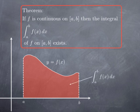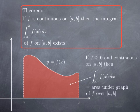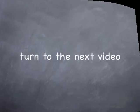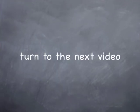To define the area, we do this approximating process, and in the limit what we obtain is a number denoted by the integral from a to b of f(x) dx. In other words, if the function is non-negative and continuous on [a, b], then the integral from a to b of f is the area under the graph of the function over [a, b]. Now that we have a formal definition, turn to the next video to see some examples and basic properties.